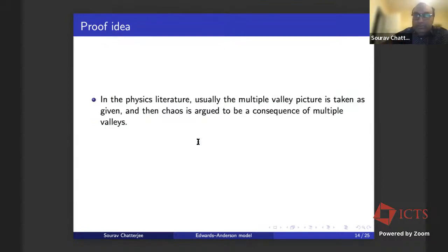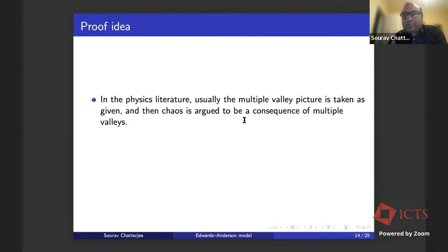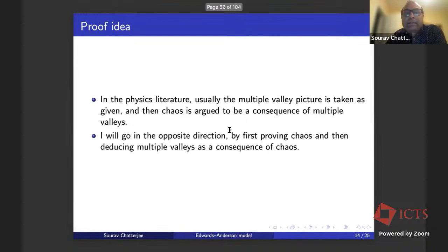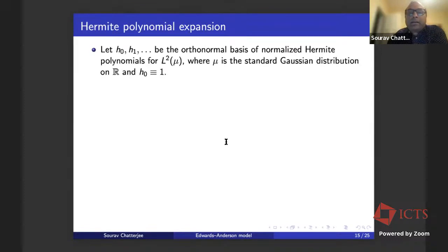In the physics literature, the multiple valley picture is usually taken as a given and chaos is argued to be a consequence of multiple valleys. But I'll go in the opposite direction: first proving the system is chaotic and then deducing the multiple valley picture as a consequence of this chaos.